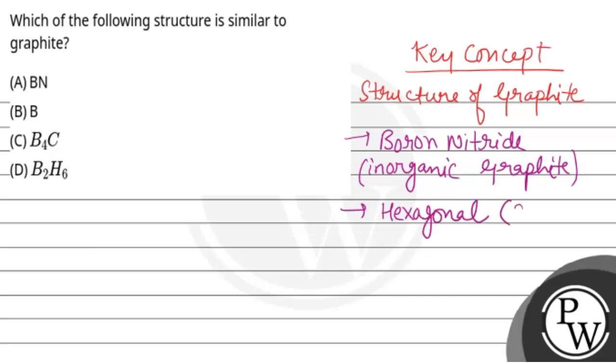It's stable in hexagonal form and has a layered structure similar to graphite. Just like graphite has a layered structure, similarly BN (boron nitride) also has that layered structure in hexagonal shape. The structure of boron nitride will be like this.